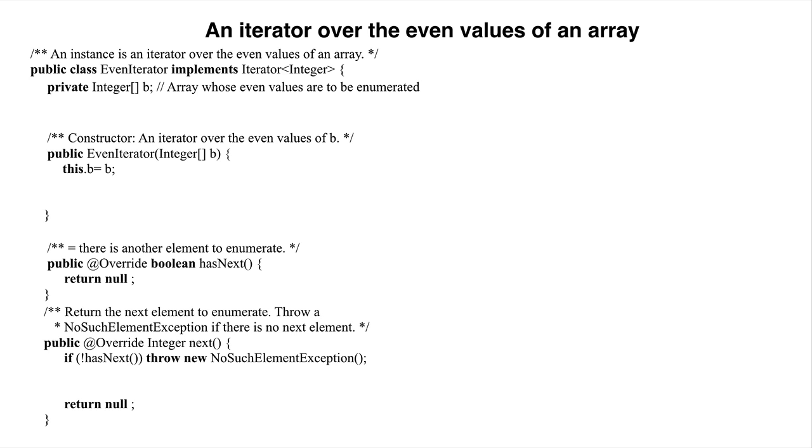Now, this class must keep track of the elements of B as they are being enumerated. For this purpose, we introduce a second field, n, which contains the index of the next element to be enumerated. n equals B dot length if all values have already been enumerated.